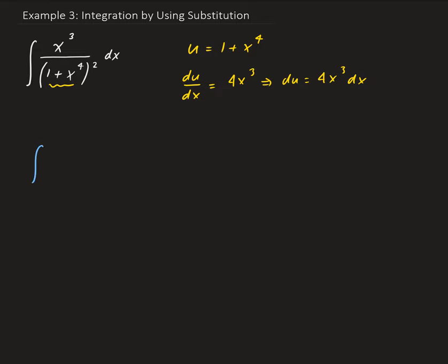So for our integral we have 1 over u squared. And then the x cubed dx, that's going to get replaced by 1 fourth du. Because over here we can go ahead and divide both sides by 4, and that will give us x cubed times dx.